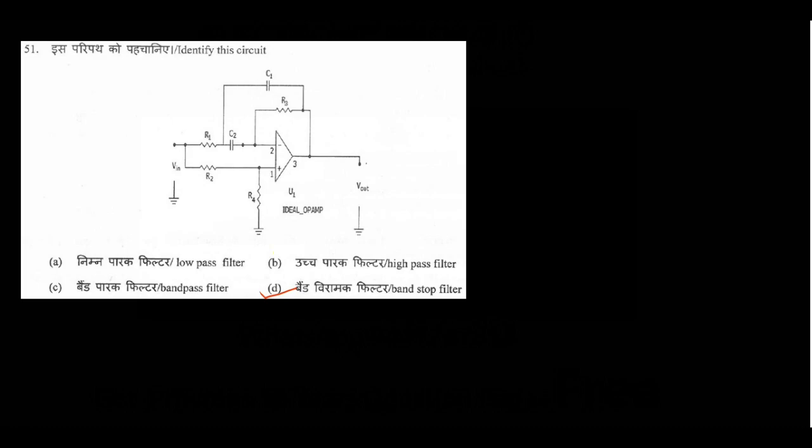Question number 51: a given op-amp circuit is given and the question is we have to identify it. The answer is band stop filter.